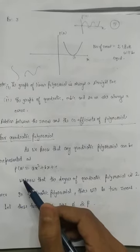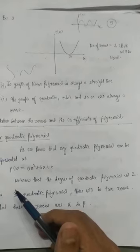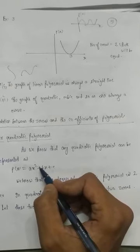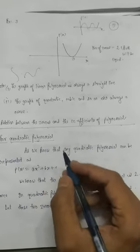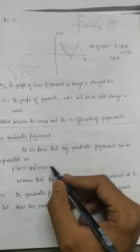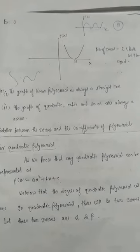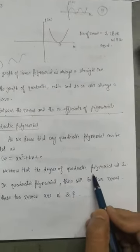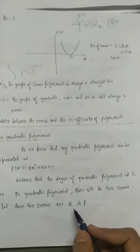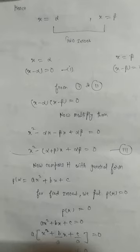In a quadratic polynomial the degree is 2, meaning the maximum power of the variable x is 2. As I told you in the previous class, whatever the degree, that is the number of zeros. So the degree is 2, meaning the quadratic polynomial will have two zeros. Let us assume those two zeros are alpha and beta.